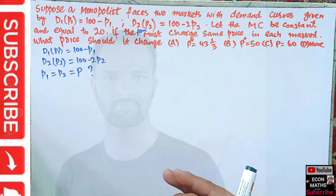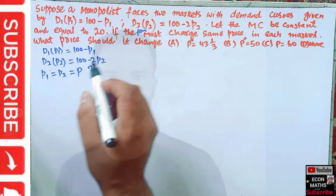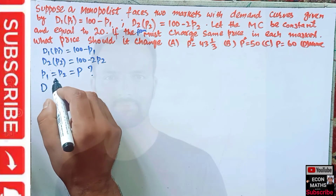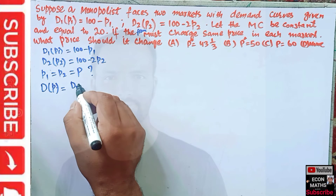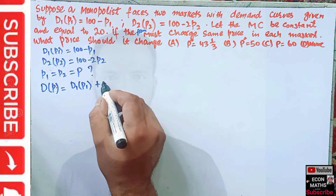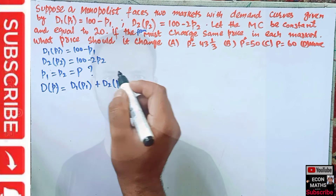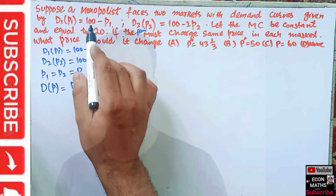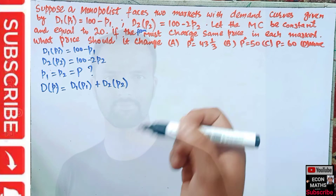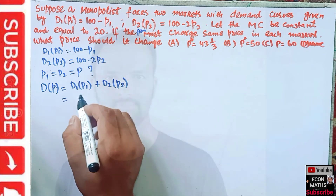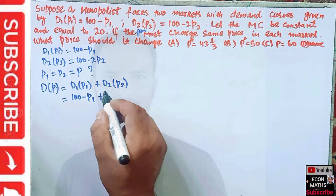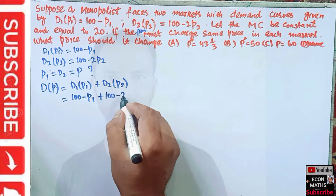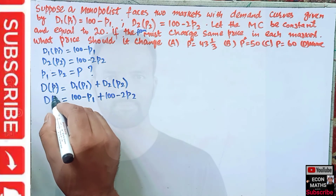To find the solution, we first add up the demand curves of the two markets to get the aggregate demand. So D(p) = D1(p1) + D2(p2). The demand curve in the first market is 100 - p1 and in the second market is 100 - 2p2, giving us our aggregate demand function.